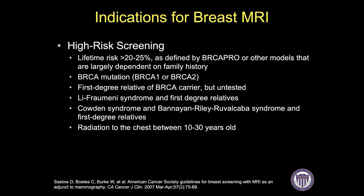What qualifies as high-risk, according to the American Cancer Society, includes a lifetime risk of breast cancer greater than 20 to 25 percent, the patient having a known BRCA mutation, or a known first-degree relative who has the mutation but the patient themself is untested. Women who have had chest radiation, such as for Hodgkin's lymphoma at a young age, are also in this high-risk group.